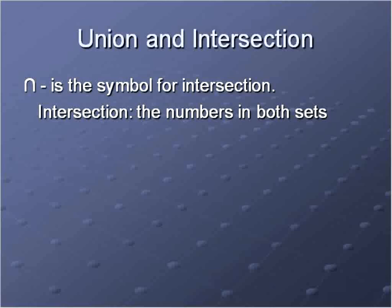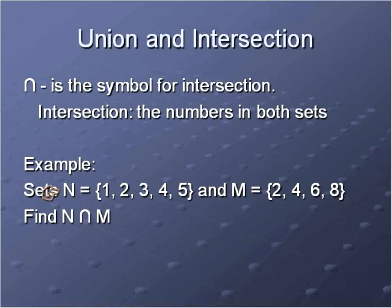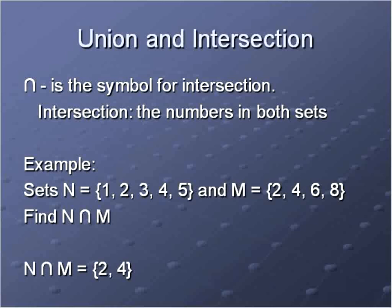The intersection is the other side of this and it's represented by a symbol that looks like an upside-down U — like a little mountain. The intersection is the numbers that are in both sets. So with the same sets N = {1, 2, 3, 4, 5} and M = {2, 4, 6, 8}, if we're asked to find the intersection of N and M, we list only the numbers that appear in both sets. In this case, 2 and 4 are the only numbers in both, so the intersection of N and M is {2, 4}.